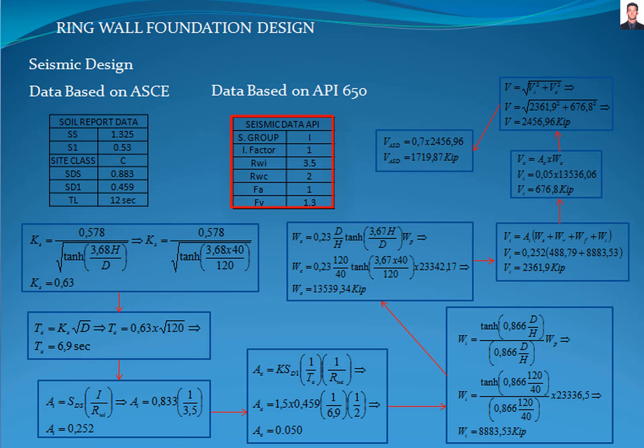The importance factor I obtained from table E5 and the response modification factors impulsive and convective RWI and RWC obtained from table E4. With this data and the dimension of the tank, we proceed to calculate the sloshing period.